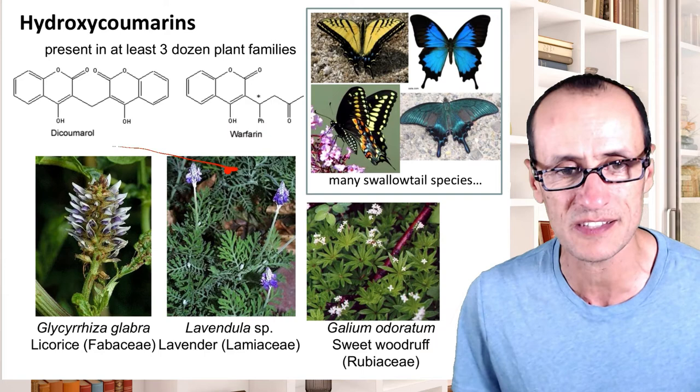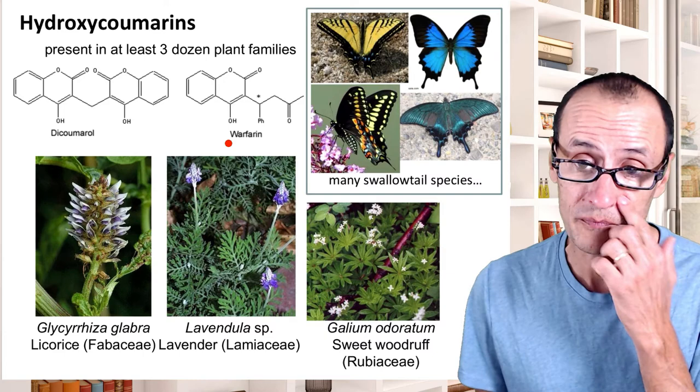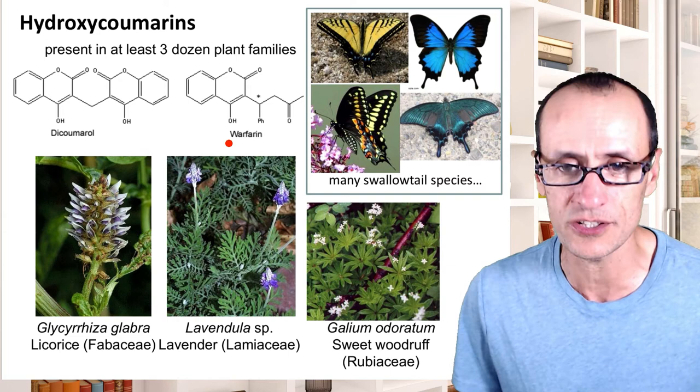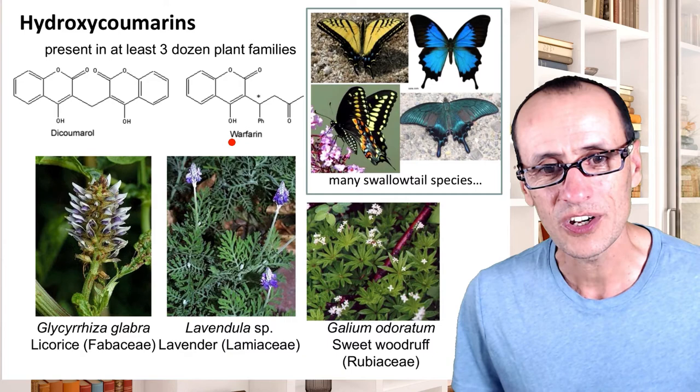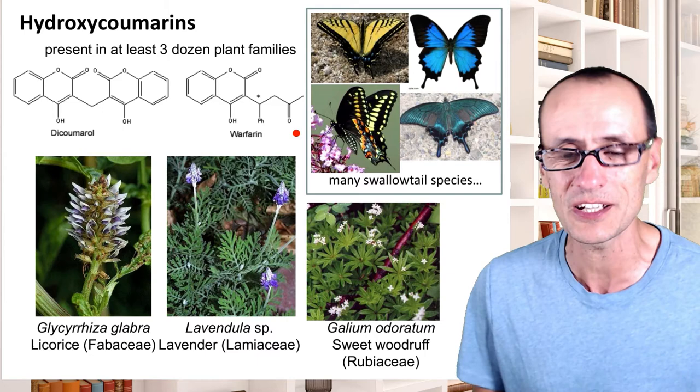Warfarin keeps blood flowing so it doesn't clot in your arteries. WARF is actually one of the buildings here on campus — the Wisconsin Alumni Research Foundation building. This compound was isolated and patented at the University of Wisconsin. If we look at the distribution of linear furanocoumarins, you only find them in about a dozen plant species. One of the most common plants with these is poison hemlock.